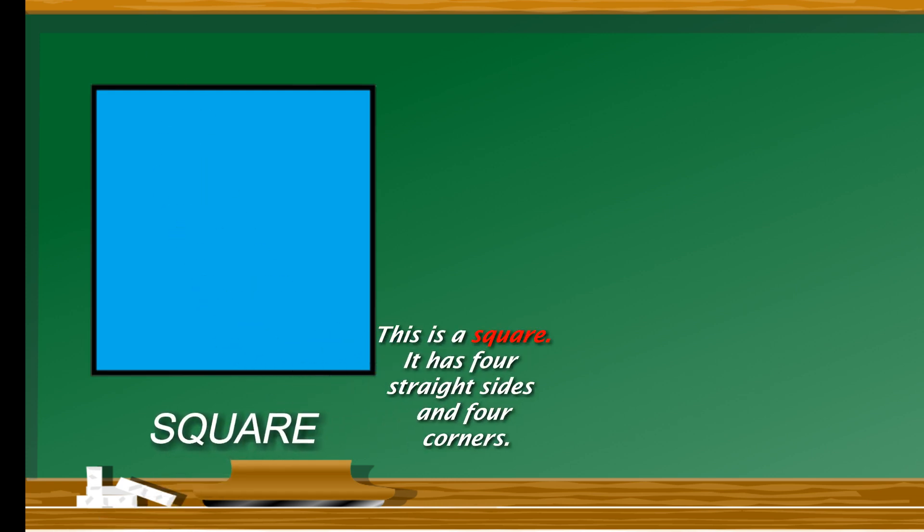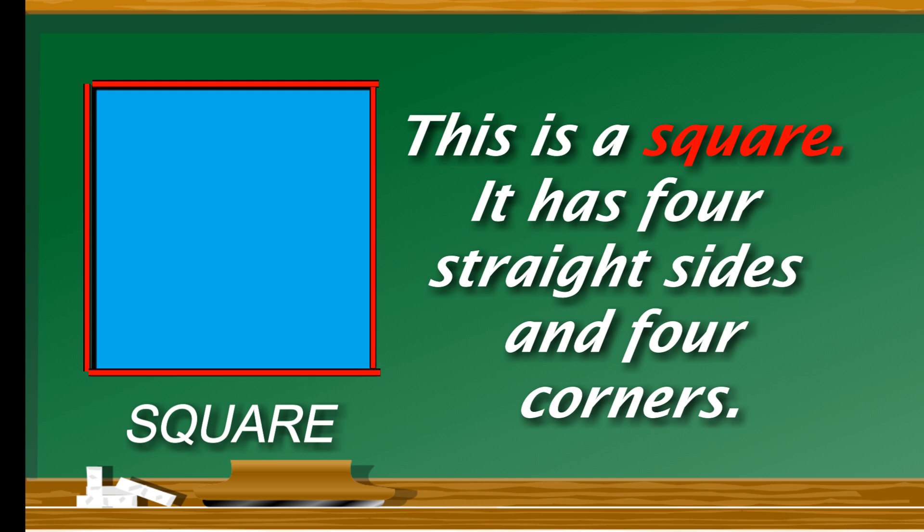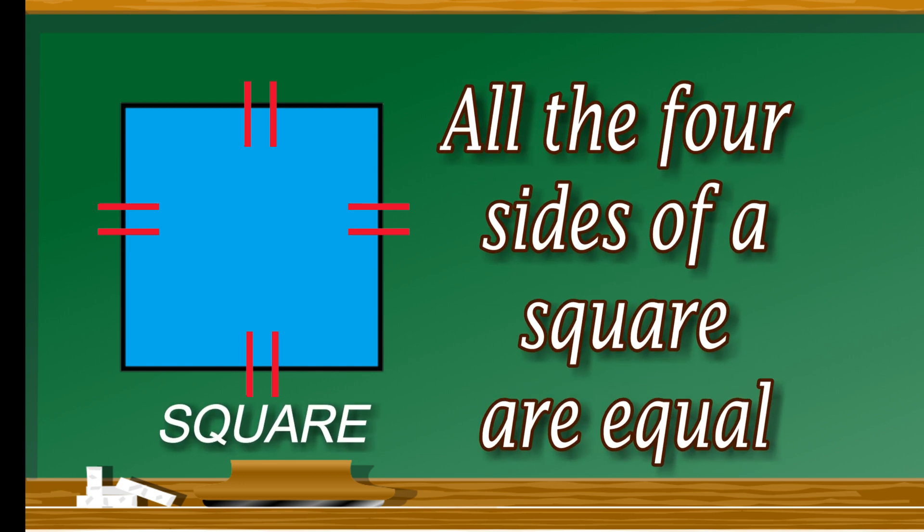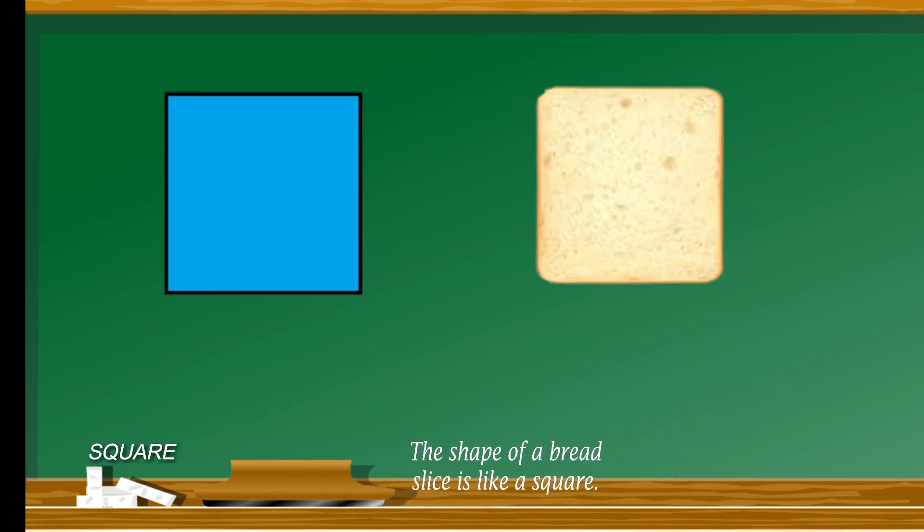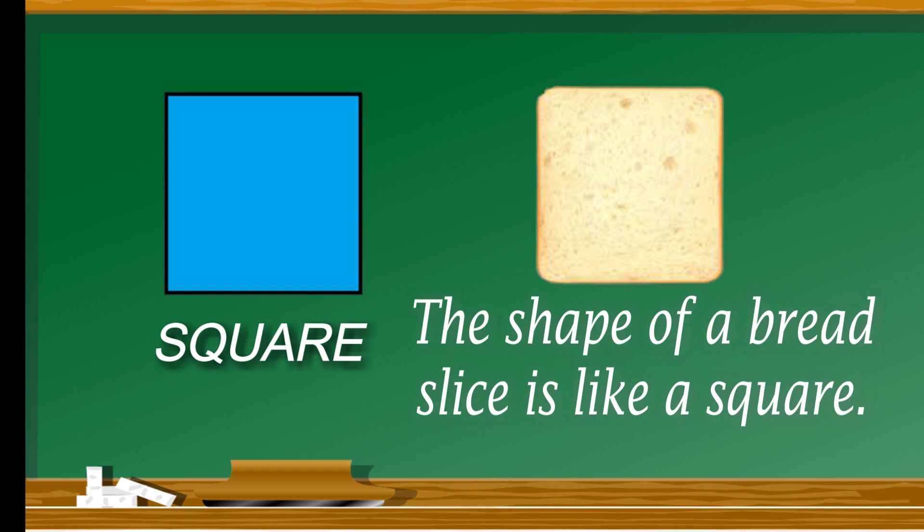This is a square. It has four straight sides and four corners. All four sides of a square are equal. The shape of a bread slice is like a square.